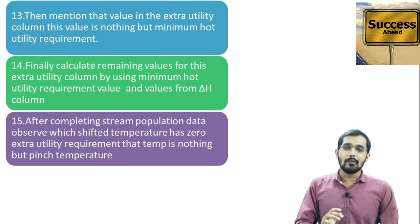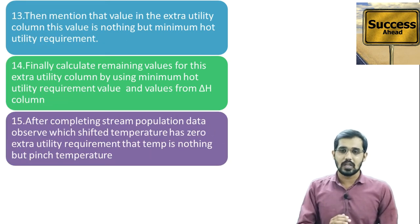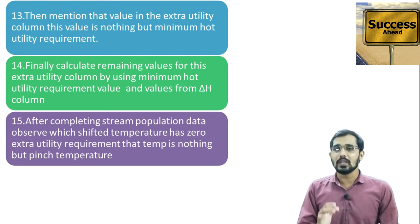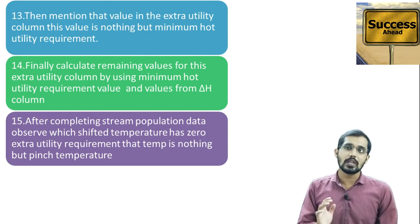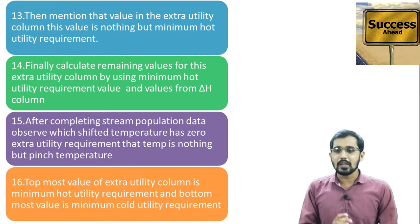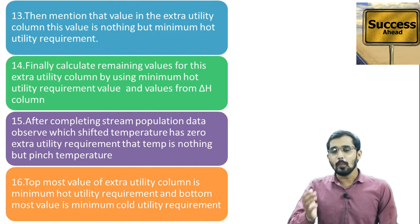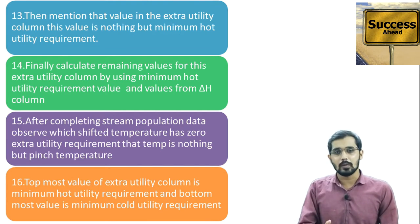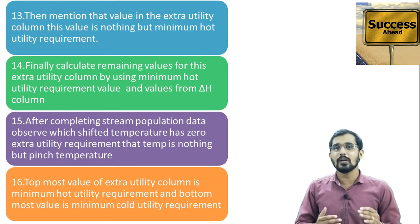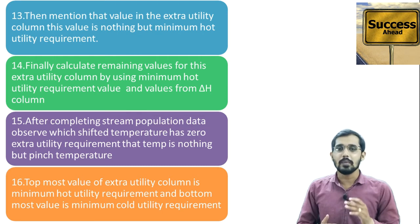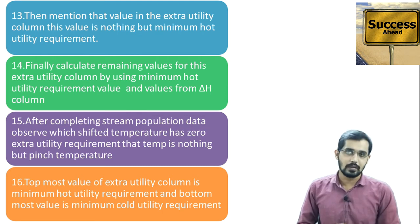After completing the stream population table, observe which value is negative in the extra utility column — the corresponding temperature for that value is the pinch temperature. The topmost value in the extra utility column is the minimum hot utility requirement, and the bottom-most value is the minimum cold utility requirement.